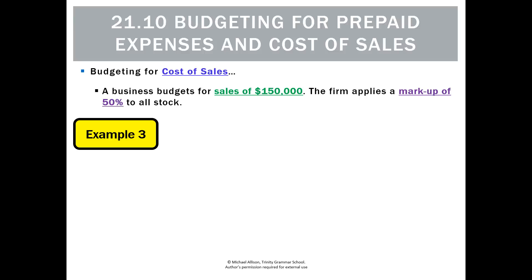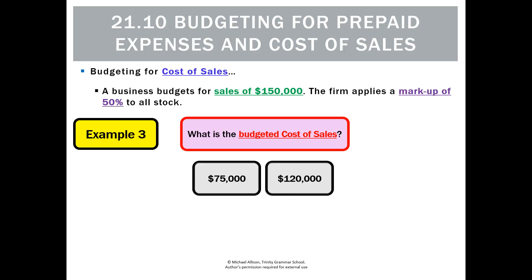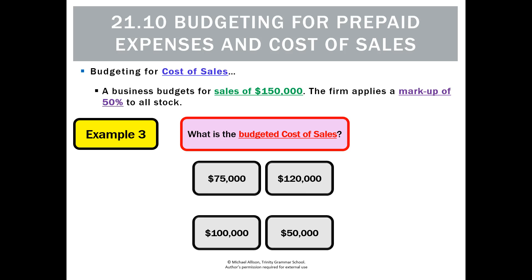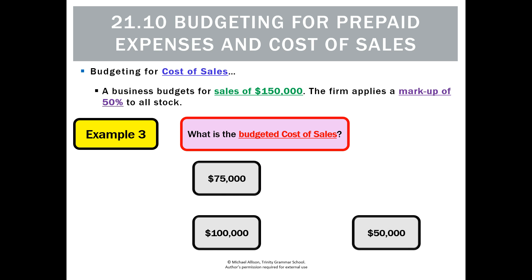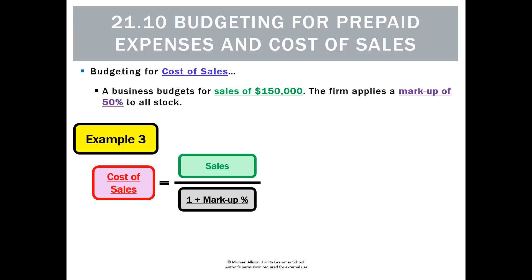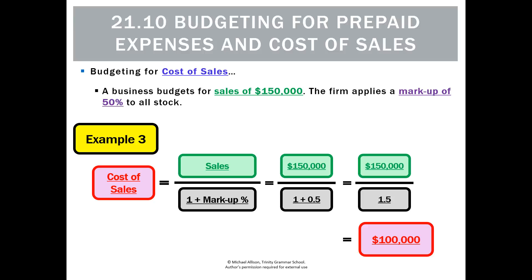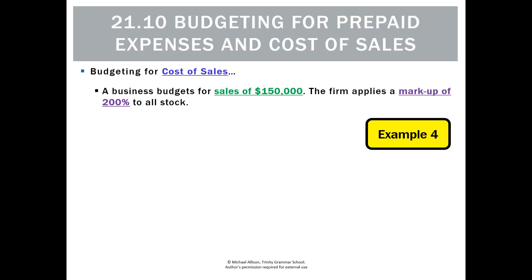Let's change the way the question is asked. This time we're given the sales — sales are $150,000 and the firm applies a markup of 50%. What will we budget for cost of sales? Options are $75,000, $120,000, $100,000, or $50,000. The temptation is to say 50% means double, so cost of sales must be $75,000 — but that's incorrect. The right answer is $100,000. When we have sales but not cost of sales, we use: cost of sales = sales ÷ (1 + markup) = 150,000 ÷ 1.5 = $100,000.